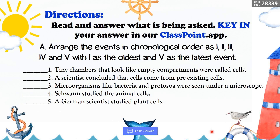Now let's have a short activity. Arrange the events in chronological order with 1 as the oldest and 5 as the latest event. Here are the answers: Number 1 — tiny chambers that look like empty compartments were called cells. Number 2 — microorganisms like bacteria and protozoa were seen under a microscope. Number 3 — a German scientist studied plant cells. Number 4 — Swann studied animal cells. Number 5 — the scientist concluded that cells come from pre-existing cells.